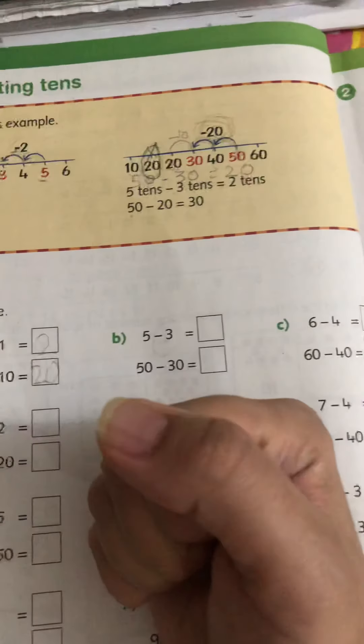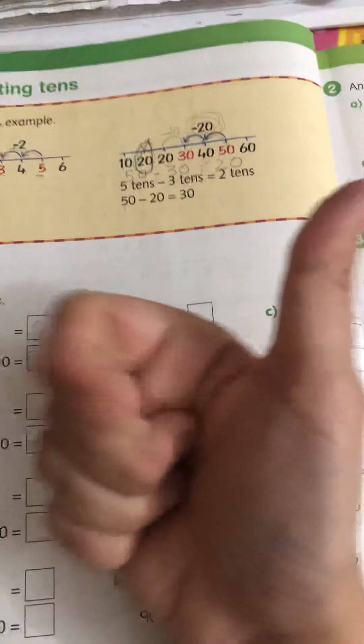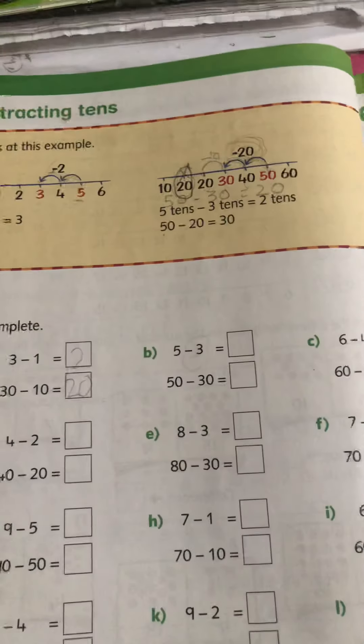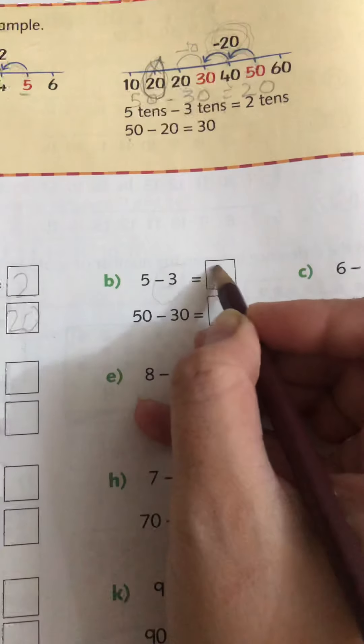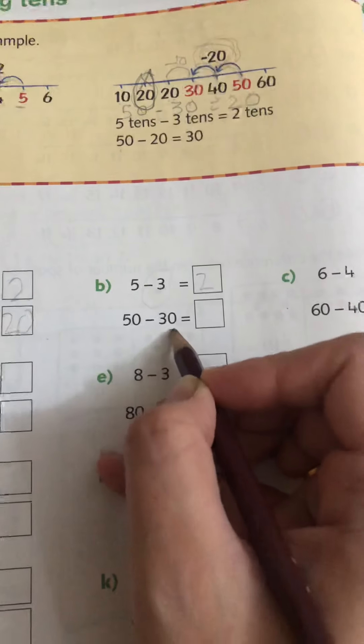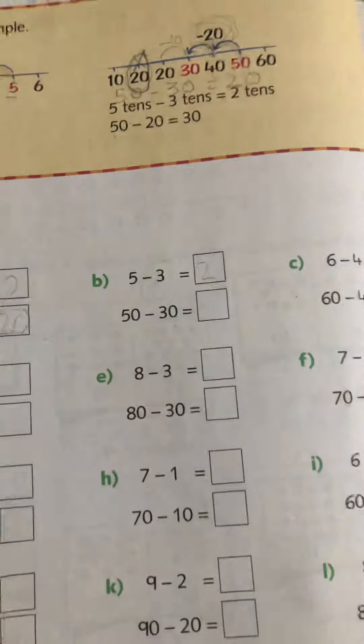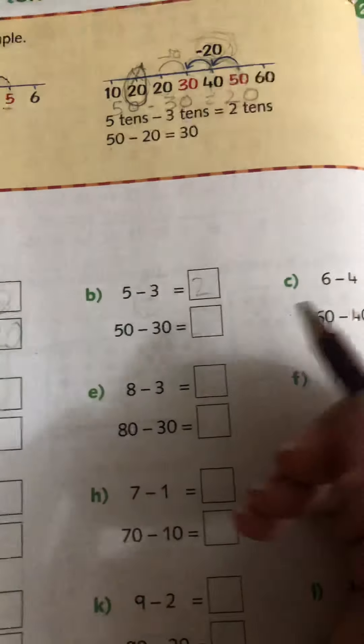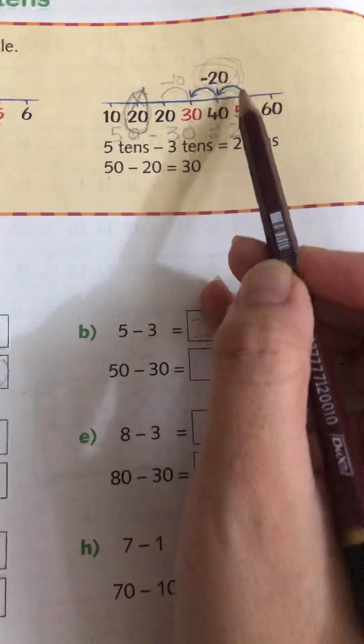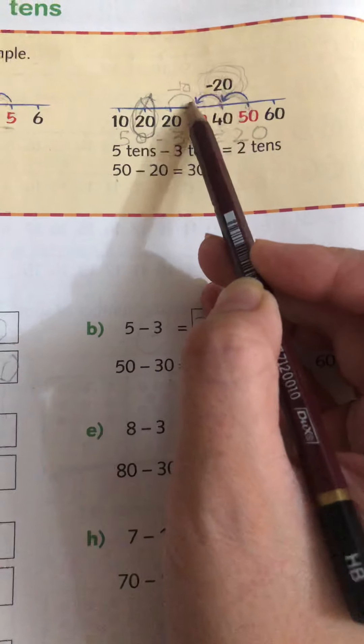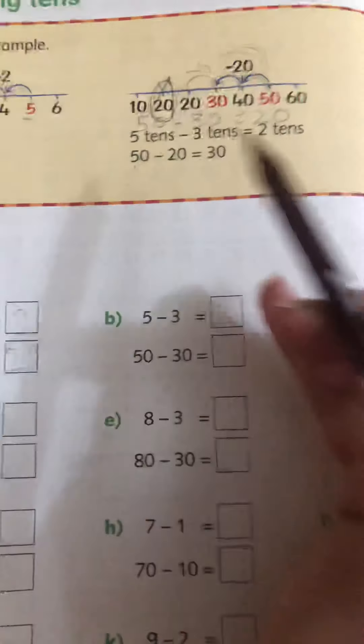3 is gone. Now we will count to reach 5. 4, 5. So our answer is 2. So 50 take away 30. If 5 take away 3 is 2, 50 take away 30, just do the same in tens. 50 take away 30, 3 more jumps. 10, 20 and 30. Yes, the answer is 20.